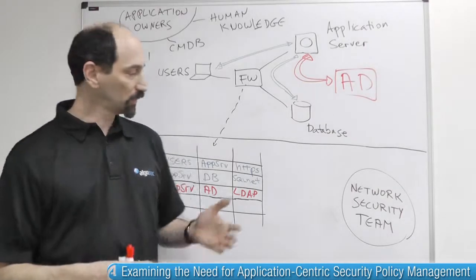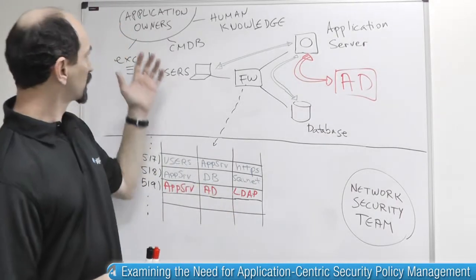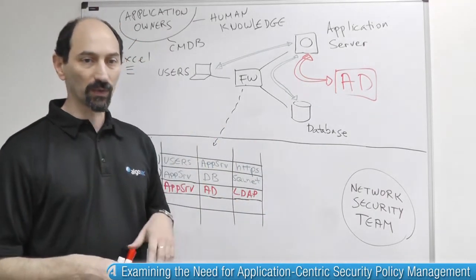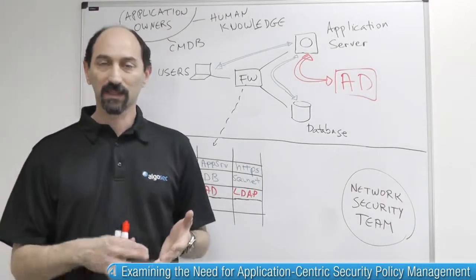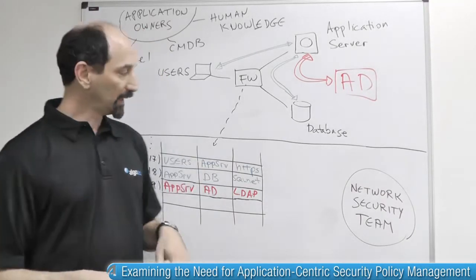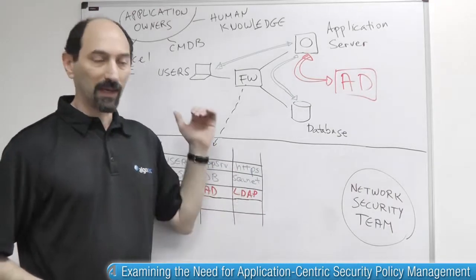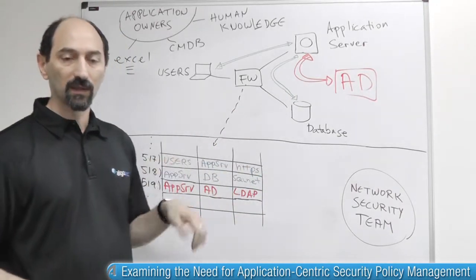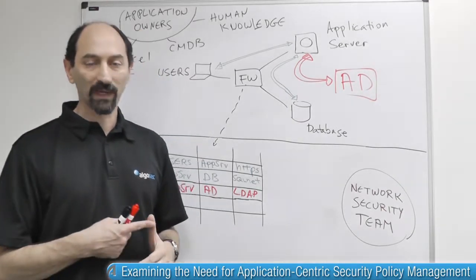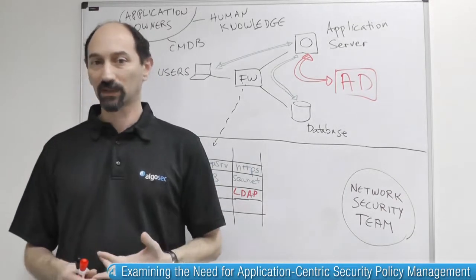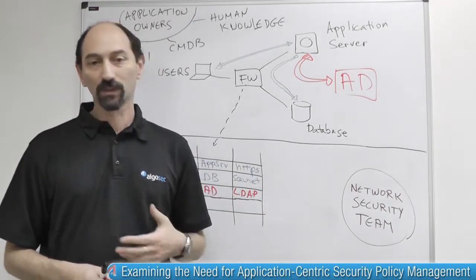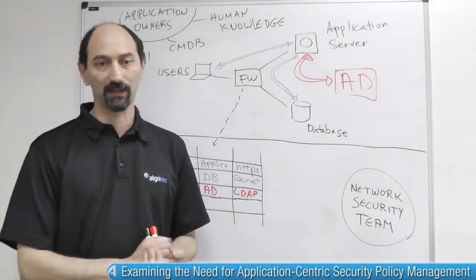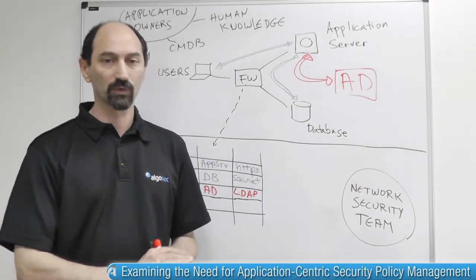What we would like to do is to be able to bridge the gap between these two separate teams so that, with better processes and better mechanisms, they can streamline the process of making such changes — so that it works more quickly, more efficiently, more accurately, and also without introducing any unnecessary risks to the organization by mistake. More on this in future lessons.